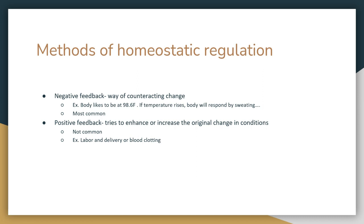The two methods of homeostatic regulation are negative feedback and positive feedback. Negative feedback is a way of counteracting change — it's the most common type. For example, your body likes to be at a temperature of 98.6°F. If the temperature rises, your body responds by trying to lower it back to that comfortable level, your homeostasis, your internal balance — such as by sweating. Your body wants to go back to how it normally is and will counteract the change.